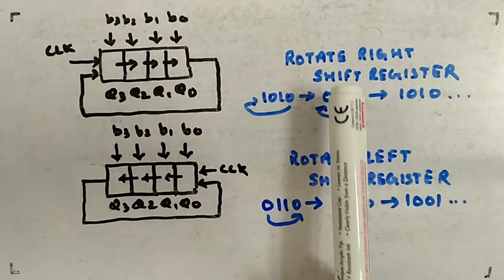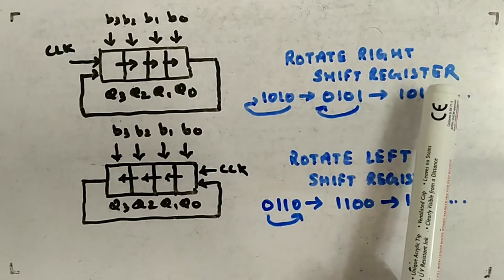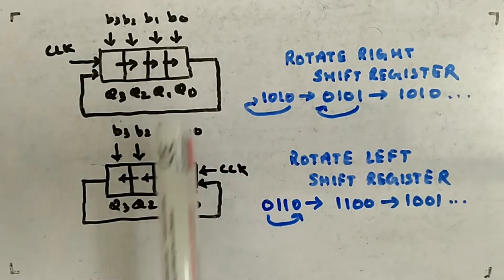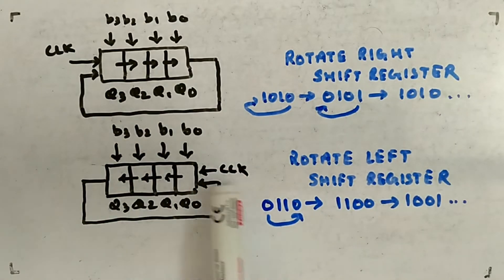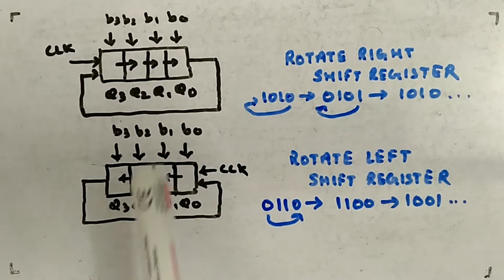Then you call it a rotate right shift register. If you have similar structure but feed the output in this fashion, this will be called a rotate left shift register. You can see the arrows: rotate right, rotate left.